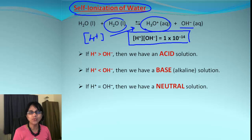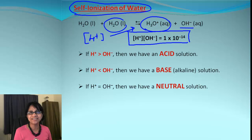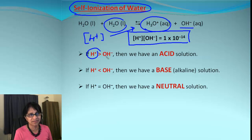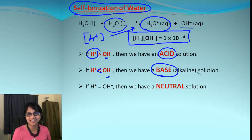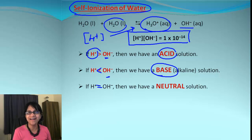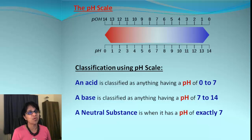There is a formula which tells you that the product of both hydrogen and hydroxide ion concentrations is 1×10⁻¹⁴. Depending on which concentration is higher, you can predict if your substance is an acid or a base. If hydrogen ion is in excess, you have an acid solution. If hydroxide ion is in excess, you have a base or alkaline solution. If they are exactly equal, you have a neutral solution.